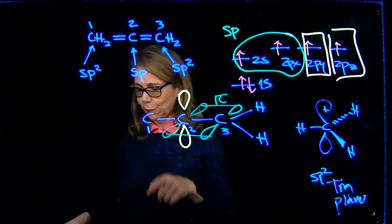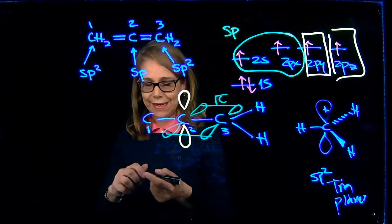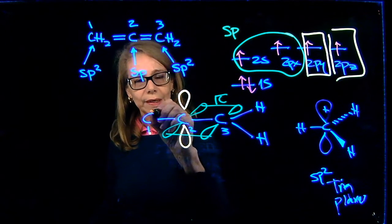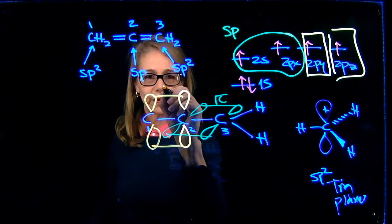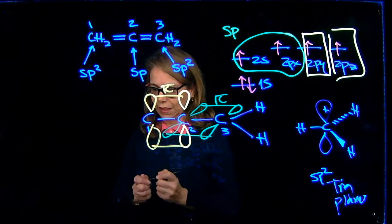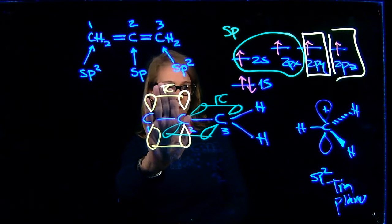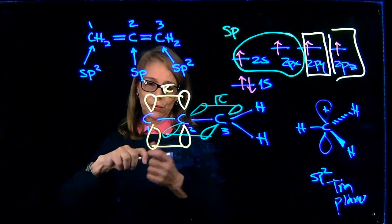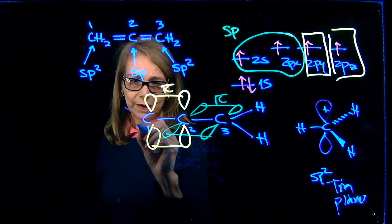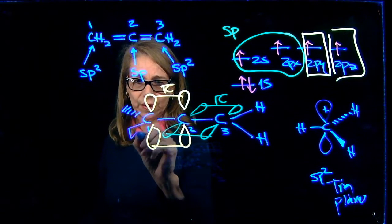Now the next pi bond, I need to make a pi bond between carbons 1 and 2. And so they need to have the same symmetry so that I have an overlap here, a constructive overlap. So now this pi bond is in this plane.